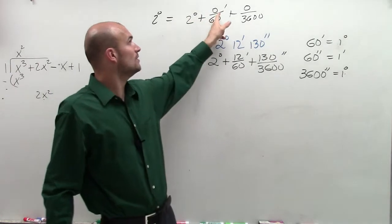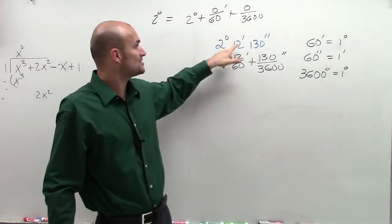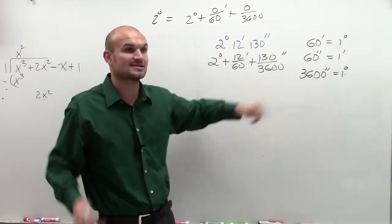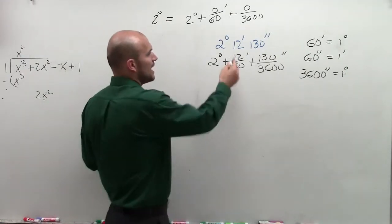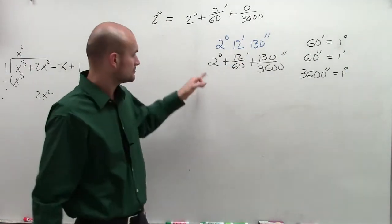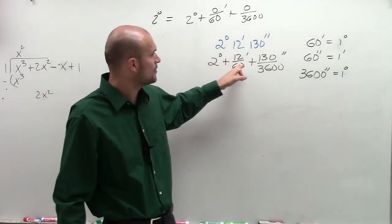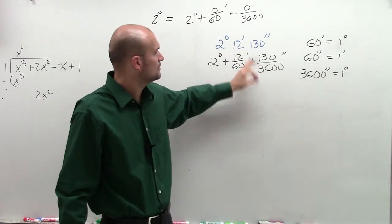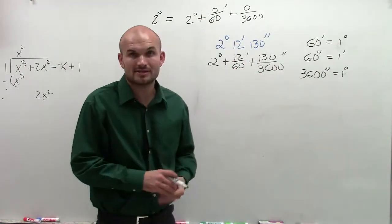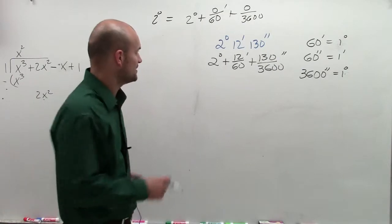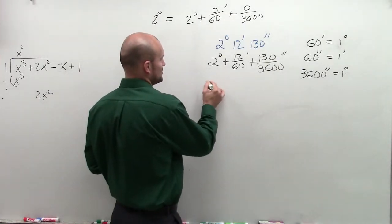However, I don't have zero minutes or zero seconds. I actually have 12 minutes and 130 seconds. So how do I represent that? I put them over, I'm going to put them over their 60 and 3,600.